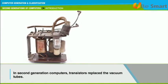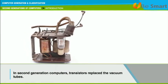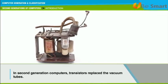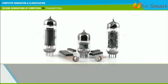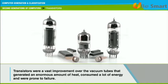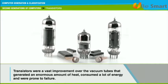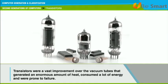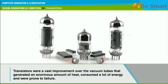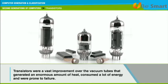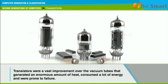Between 1956 and 1963, transistors replaced vacuum tubes of the first generation computers. Transistors were a vast improvement over the vacuum tubes used by the first generation computers that generated an enormous amount of heat, consumed a lot of energy, and were prone to failure. Though transistors were invented in 1947, they were not popular in use until the late 50s.